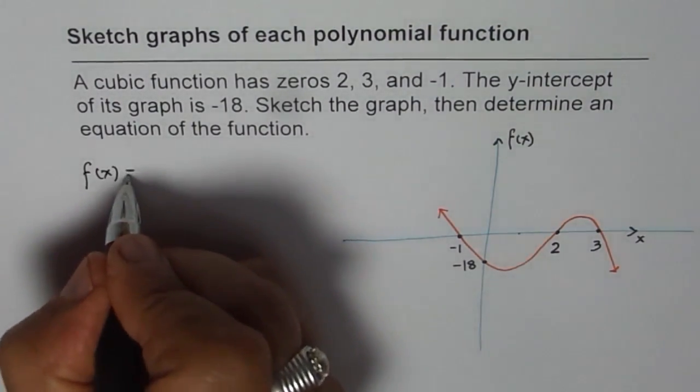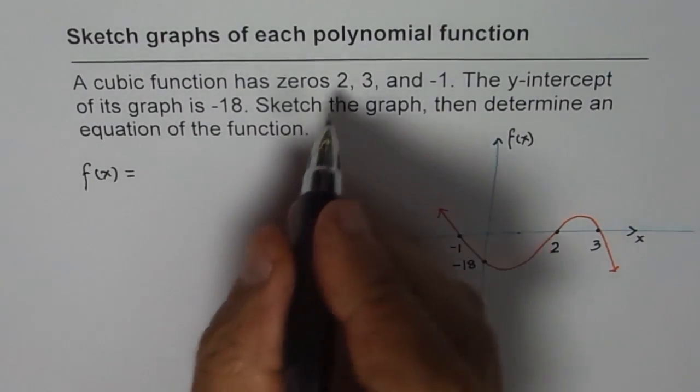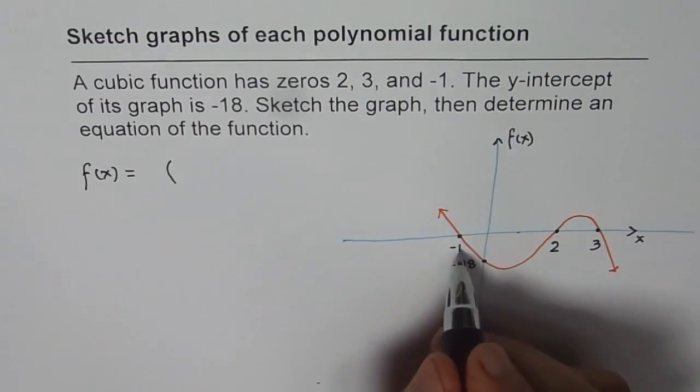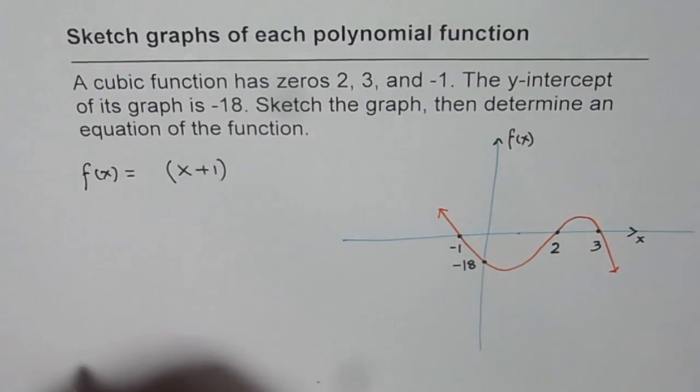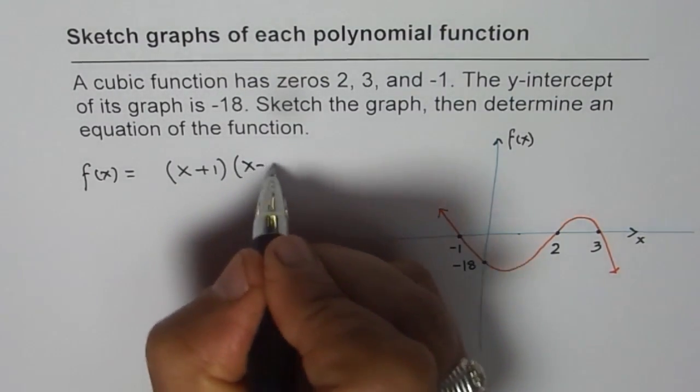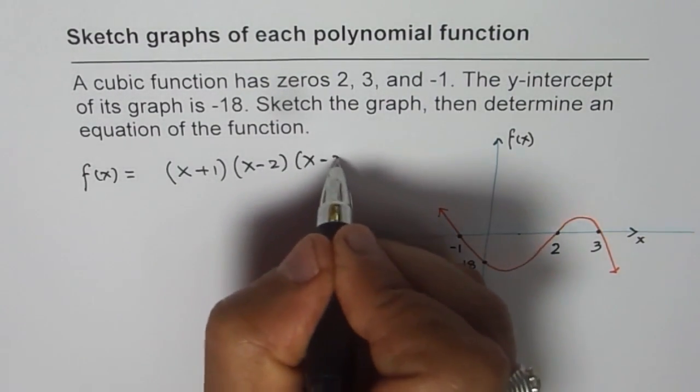Now, let's write the equation for this function. So, F of X should be equal to the zeros. Zeros are at, let's start from here, minus 1 means X plus 1. At minus 1, you get this 0. Then, we have X minus 2 times X minus 3.